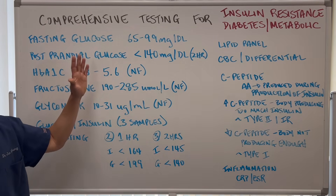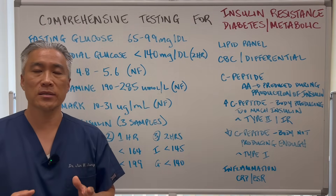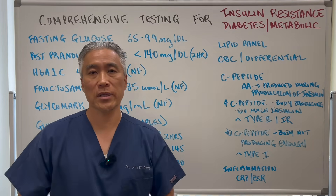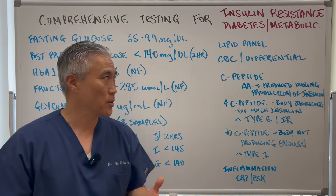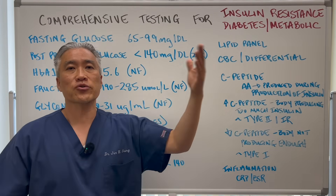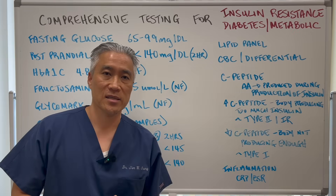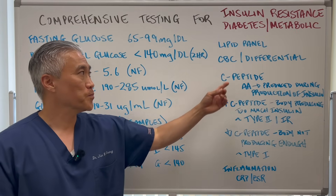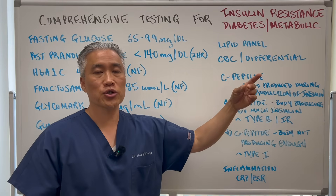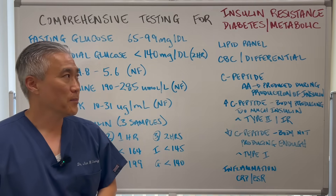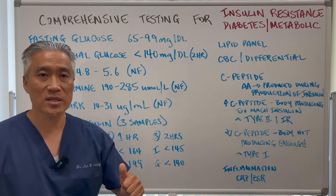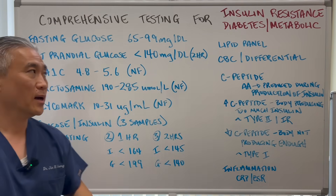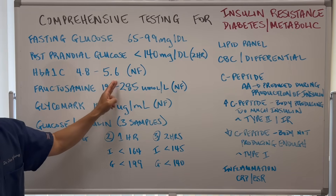When we combine all these tests, we can determine if someone has prediabetes or diabetes. For metabolic markers, we can also check lipid panels like cholesterol and triglycerides, because high triglycerides in the fasted state likely indicate insulin resistance or sugar dysregulation. CBC with differential, looking at red blood cells, is also important because we're looking at hemoglobin A1c, and anemia can impact how that marker looks.